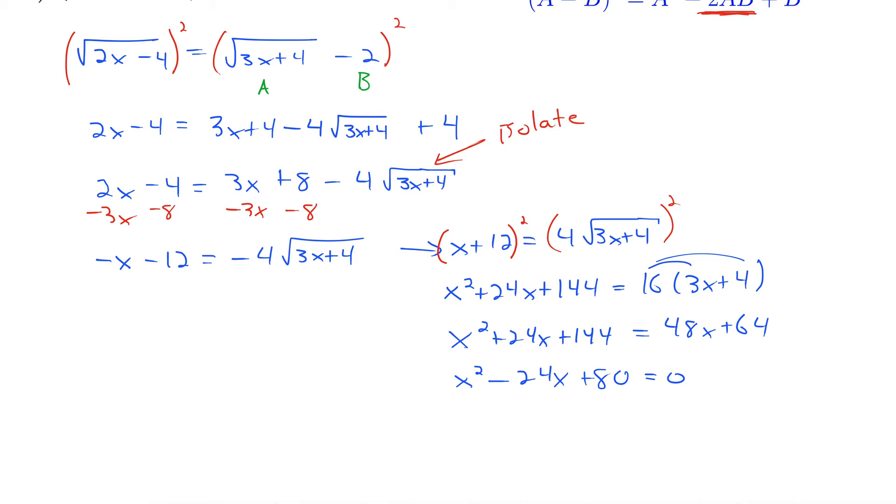So we just have to factor this now. We need factors of 80 that add up to negative 24. Let's see, it's 1 and 80. Well, that doesn't do it. 2 and 40. No, that's 42 or 38. 80 is not divisible by 3. So nothing there. 4 and 20. Now we're in business. Because 4 plus 20 is indeed 24. So this is actually negative 4 times negative 20. That does the trick. So x minus 4, x minus 20. Setting both of those terms equal to 0 and solving gives us x equals 4 and x equals 20.